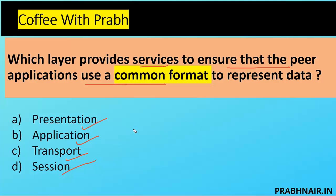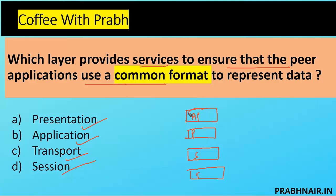If you take the Presentation Layer as an example — we have Application Layer, then Presentation Layer, then Session Layer, then Transport Layer. When you open a browser and type HTTP, you interact on the Application Layer. From there, data moves to the Presentation Layer, which is responsible for encryption, compression, and presenting the format. The question is about format, so Presentation Layer makes sense.